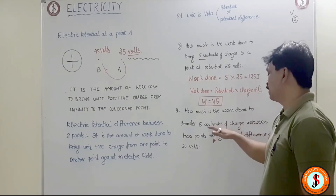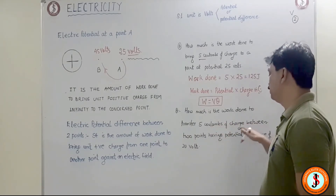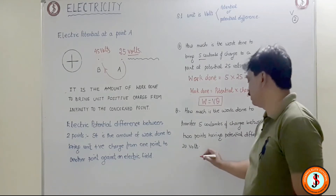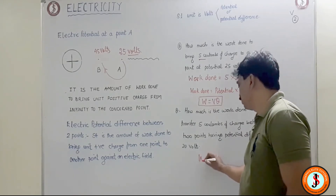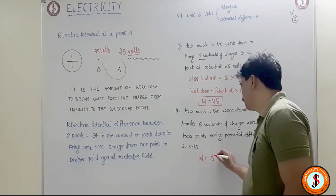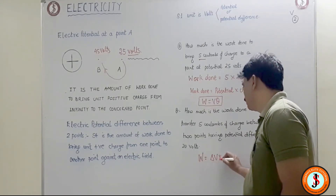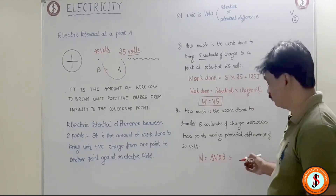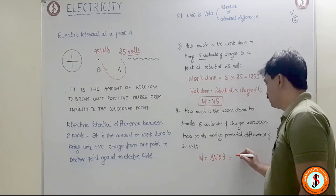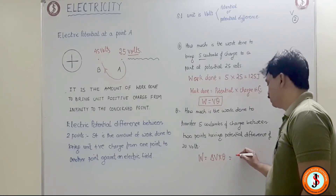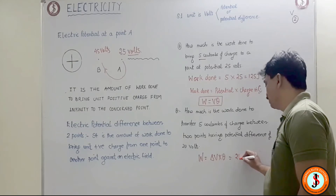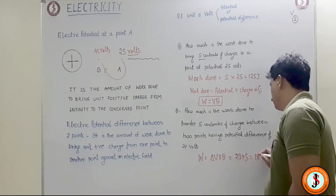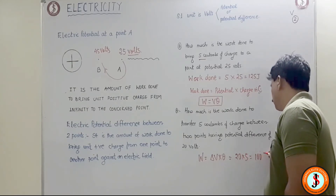Again the same question: how much is the work done to transfer 5 Coulombs of charge between two points having a potential difference of 20 volts? Work done is straightaway potential difference into charge in Coulombs. Potential difference is 20 volts and charge is 5 Coulombs, so we do 100 joules of work.